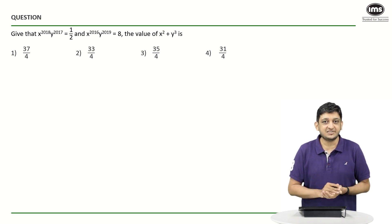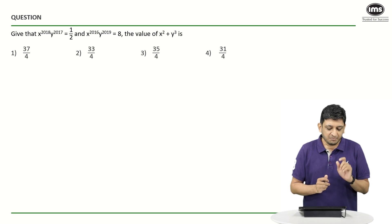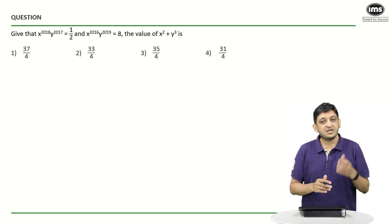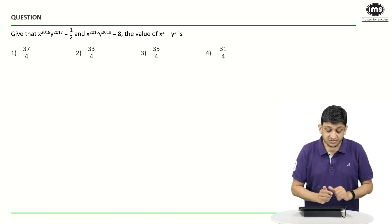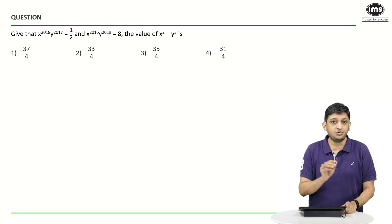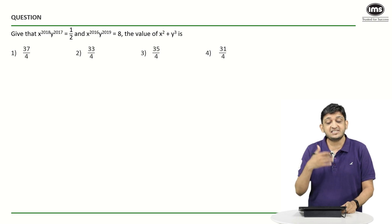You have to trust the paper setter and try to go with the flow and see where it leads. Here, because you have something as a product and you have something as another product and you are expected to find a sum, what you can do is divide these two expressions by each other. In this case, let's say I take X raised to 2018 into Y raised to 2017 and divide it by X raised to 2016 and Y raised to 2019.